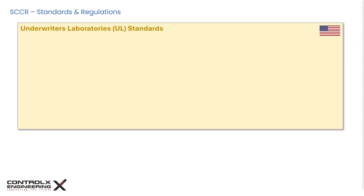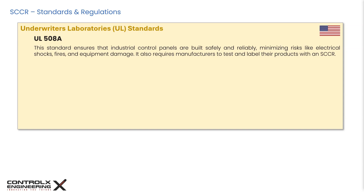UL standards are safety requirements and testing procedures developed by Underwriters Laboratories, a global private safety company headquartered in the United States. These standards cover a wide range of products from household appliances to industrial equipment. UL 508A is the safety standard pertaining to industrial control panels, outlining requirements for electrical safety, mechanical strength, and fire resistance. Key aspects covered include component selection, wiring methods, grounding, and SCCR ratings, ensuring that control panels are built safely and reliably while minimizing risks like electrical shocks, fires, and equipment damage.